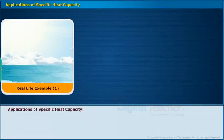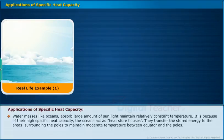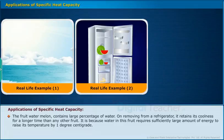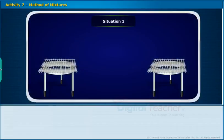Applications of specific heat capacity: Water masses like oceans absorb large amounts of sunlight and maintain relatively constant temperature because of their high specific heat capacity. The oceans act as heat storehouses, transferring stored energy to areas surrounding the poles to maintain moderate temperature between the equator and the poles. The fruit watermelon contains a large percentage of water; on removing from a refrigerator it retains its coolness for a longer time than any other fruit, because water requires a sufficiently large amount of energy to raise its temperature by 1 degree Celsius. Samosas appear cool on the surface but the curry inside remains hot because the specific heat of its ingredients is high.